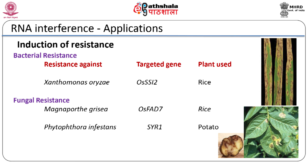RNAi-mediated knockdown of the fatty acid desaturase genes OsSSI2 and OsFAD7 significantly enhanced resistance to the leaf blight bacterium Xanthomonas oryzae and the fungal pathogen Magnaporthe grisea in rice. RNA silencing of the plasma membrane-localized syntaxin-related gene led to resistance against the fungal pathogen Phytophthora infestans. Syntaxins play a role in secretory defense responses, particularly formation of callose-containing papillae in potato.